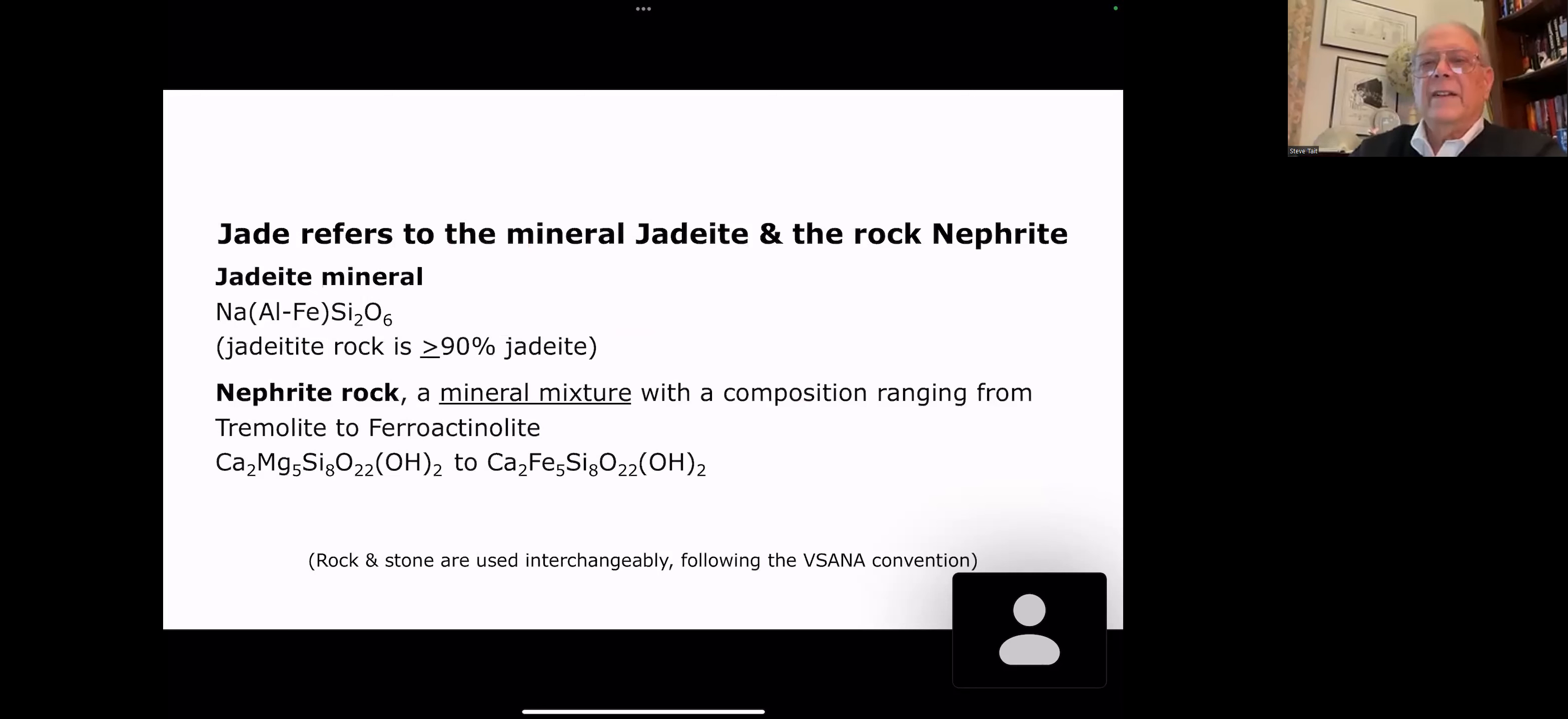So let's talk about jade. Jade refers to either the mineral jadeite or the rock nephrite. Some of you are saying, hold on. I thought nephrite was a mineral. Well, the International Mineralogical Society reclassified nephrite as a rock because nephrite's actually a mixture, a mineral mixture ranging from tremolite to ferroactinolite. If you're interested in chemistry, there's their chemistry. Whereas jadeite is a mineral because it's a single compound. If you're interested in chemistry, that's there. There's also jade-type rock, which is 90% jadeite. Again, rock and stone are being used interchangeably now. So we got a mineral and rock are both referred to as jade. And we're going to talk about their rinds separately.